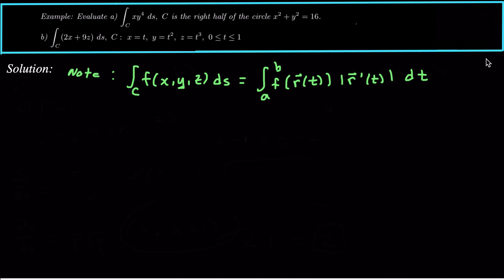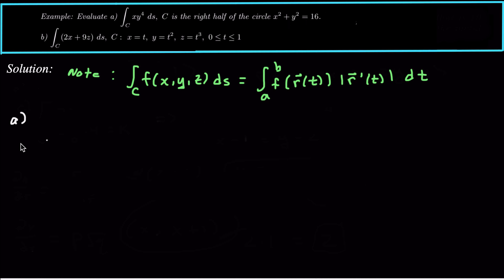So you just have one function — in this case, Part A: x times y to the 4, ds — and that tells you you should be using this formula: integral from A to B of f(r(t)) times the magnitude of r'(t) dt. This f(r(t)) just means take whatever x is and plug it in for x in terms of t, and take whatever y is in terms of t and plug it in for y. So in this example Part A, we're going to need to parameterize the circle ourselves.